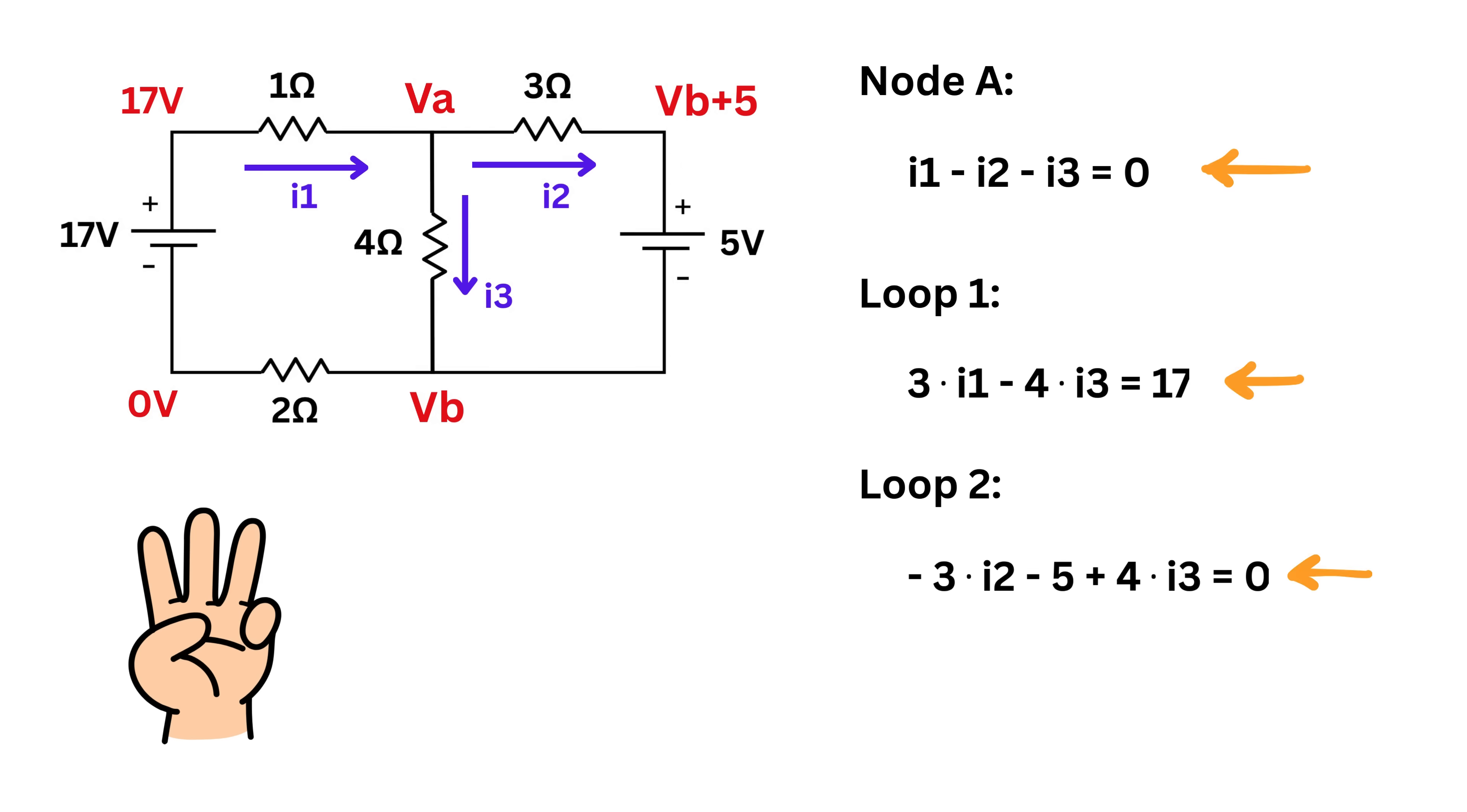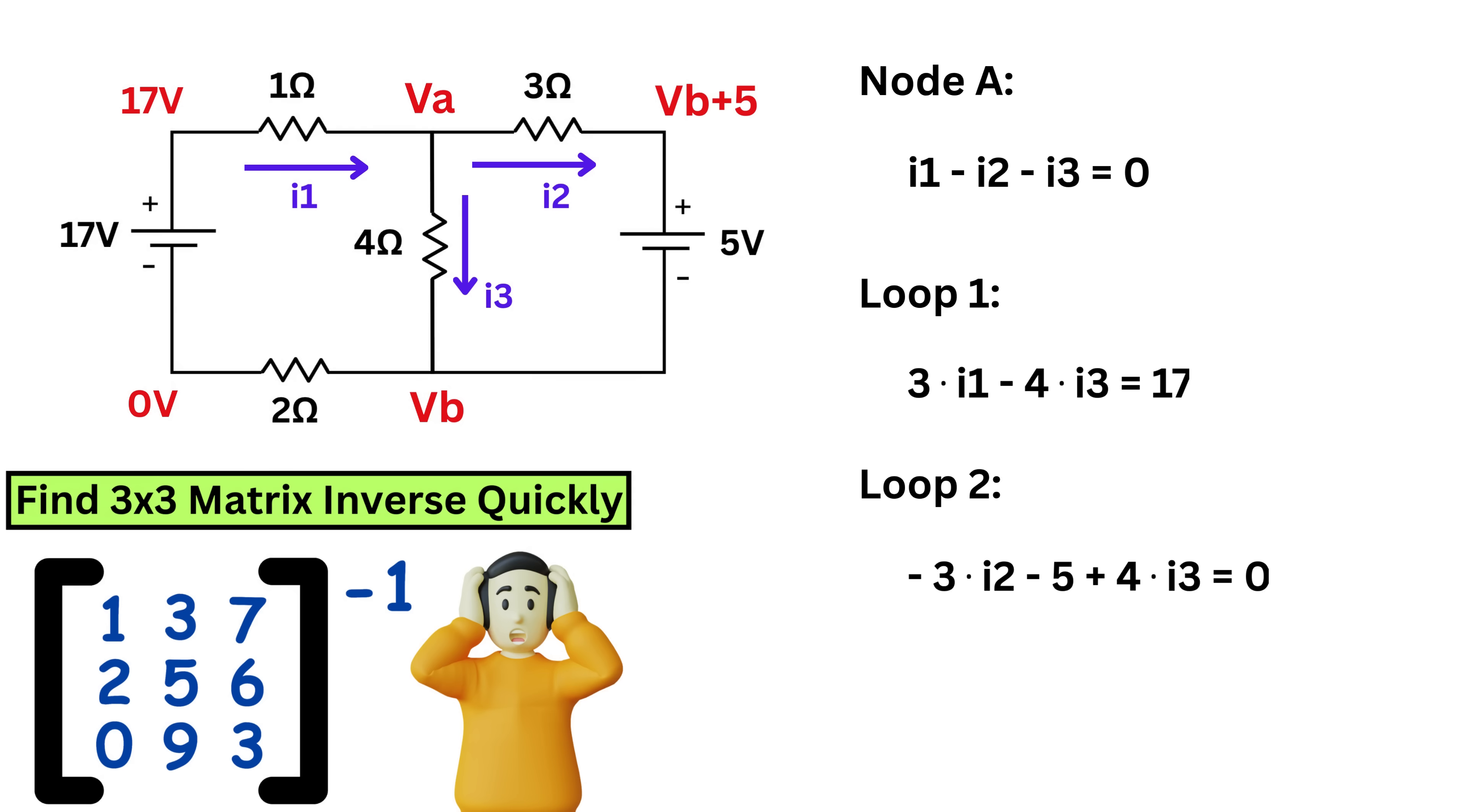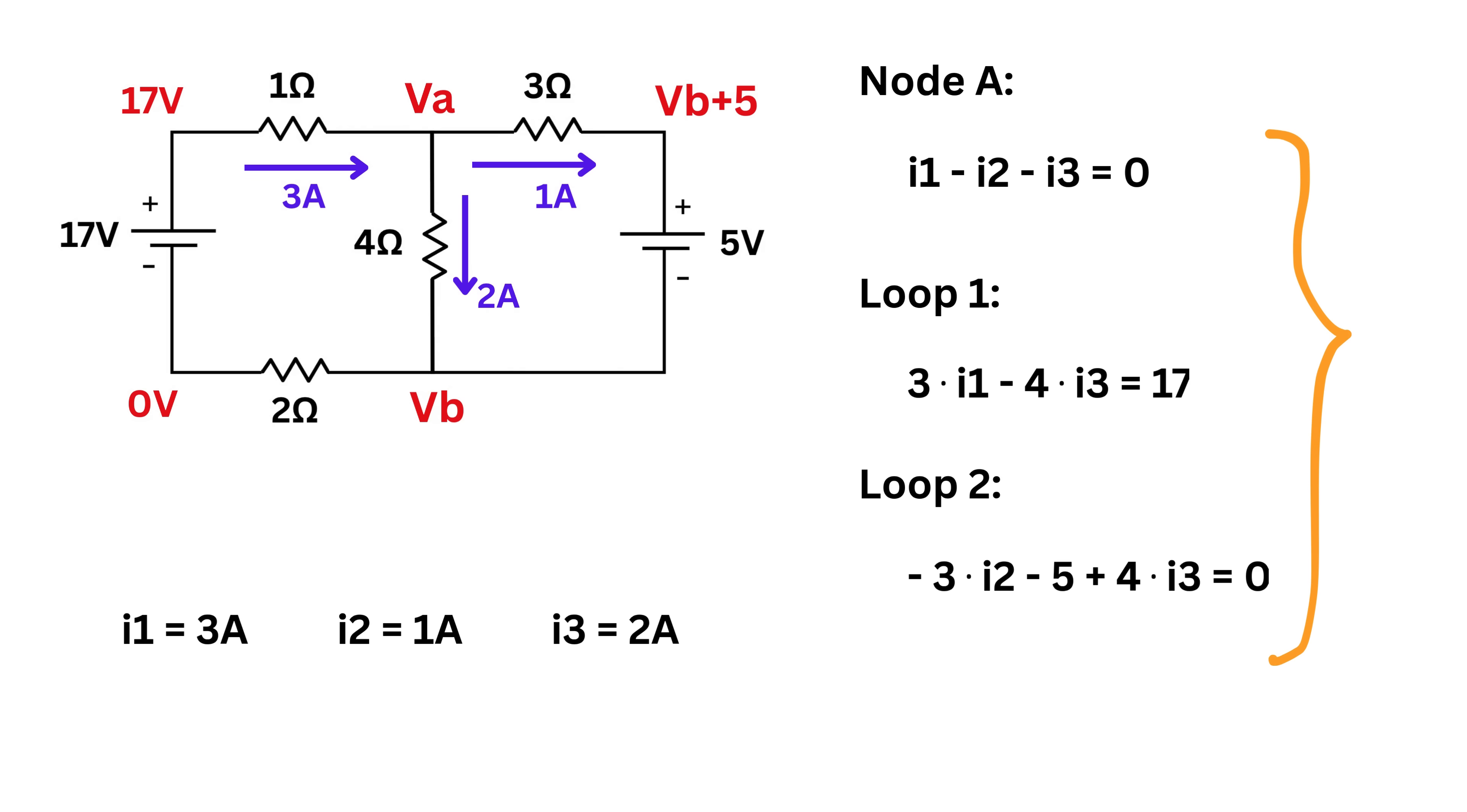Now I am in no mood to solve a system of three equations. You can do it easily by the way. I have made a video on solving a system of equations using matrix inverse and the link is in the description. See that was a smooth promotion of my previous video. After solving this we get i1 as 3 amps, i2 as 1 amp and i3 as 2 amps.